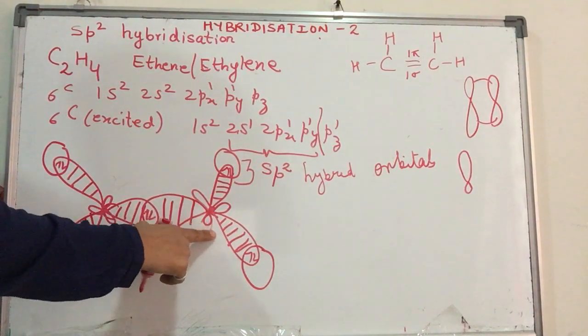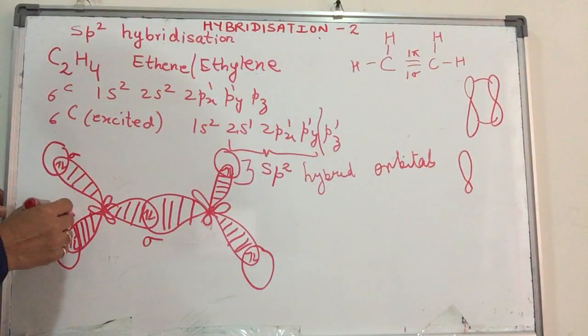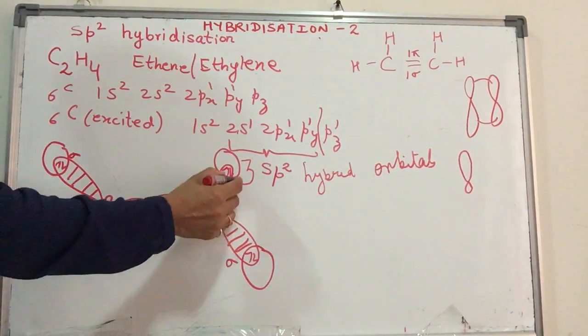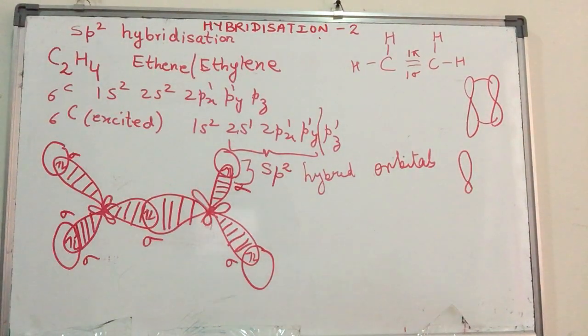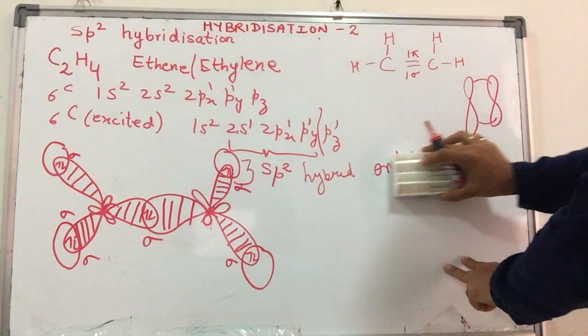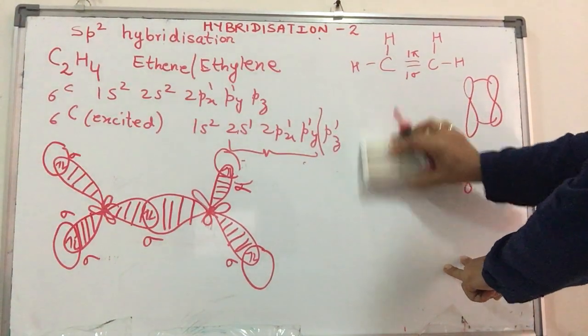Now let us see how many sigma bonds are there. Sigma, sigma, sigma, sigma, sigma, sigma, sigma. And this we already spoke is a sigma bond.